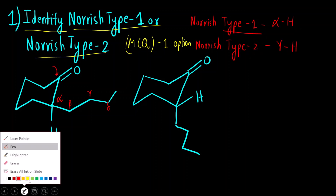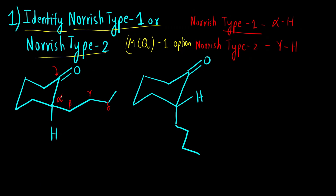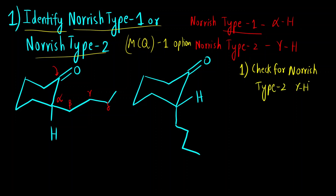Here we need to check for Norrish type 2 reaction — whether gamma hydrogen is present or not. Why gamma hydrogen? Because in the process a six-membered stable transition state is formed.